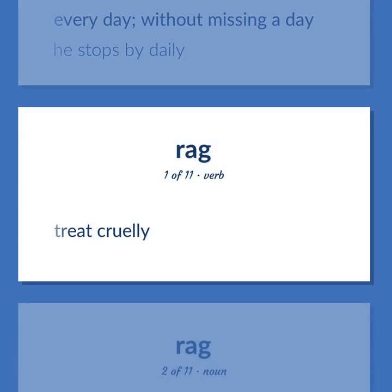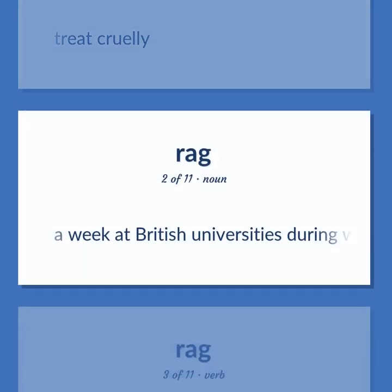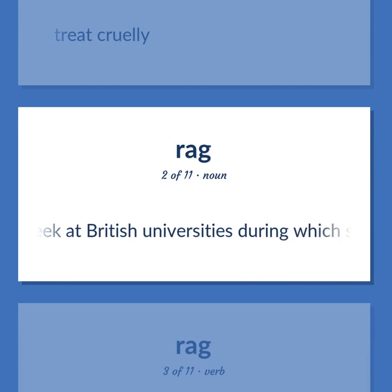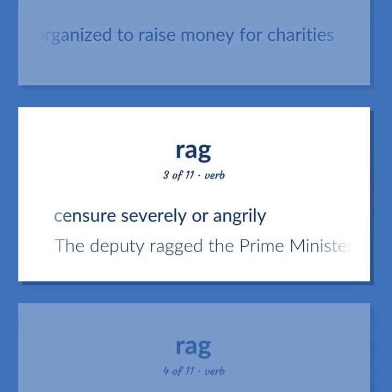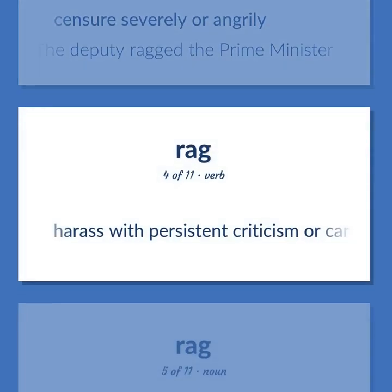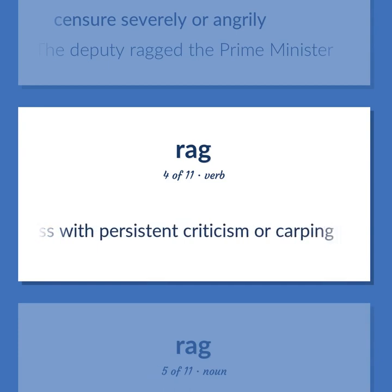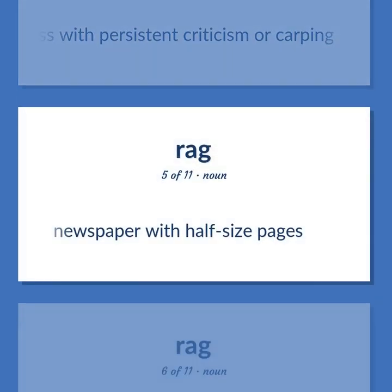Rag (verb): Treat cruelly. Rag (noun): A week at British universities during which side shows and processions of floats are organized to raise money for charities. Rag (verb): Censure severely or angrily. Example: The deputy ragged the prime minister. Harass with persistent criticism or carping. Rag (noun): Newspaper with half-size pages.